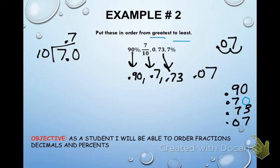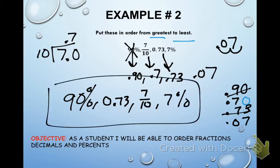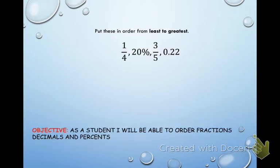This time we order from greatest to least. The greatest is 0.90, which goes with 90% — cross it off and put 90% first. Next is 0.73, which is 73/100. Then 0.70, which is seven-tenths. Finally, the last one is 7%. That's your order from greatest to least.